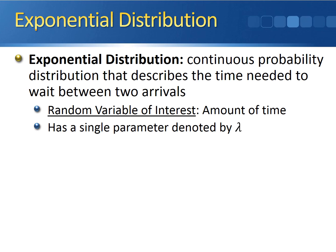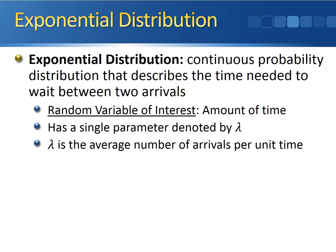The exponential distribution has a single parameter denoted by lambda, defined as the average number of arrivals per unit time. This lambda is exactly the same as in the Poisson distribution — the average number of arrivals in a given period of time. Lambda connects the Poisson and the exponential distribution; they are directly related to one another.